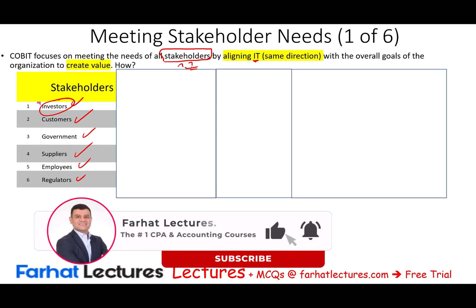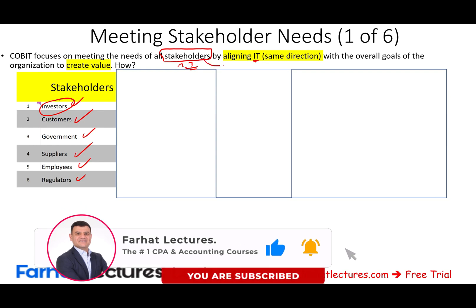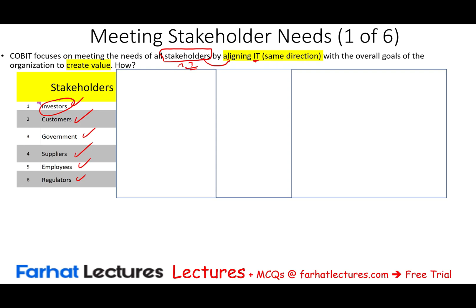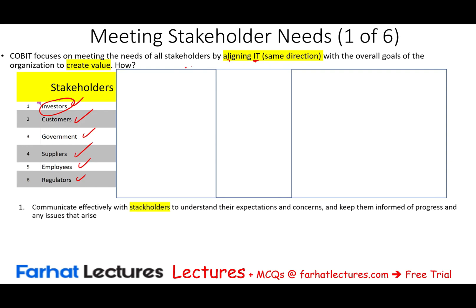So what COBIT tries to do is align the stakeholders with the IT. The IT system should serve the stakeholders, and both should work in the same direction to create value for the organization. One thing we need to do with stakeholders is communicate effectively so we understand their expectations and concerns, and keep them informed of progress and any issues that arise.